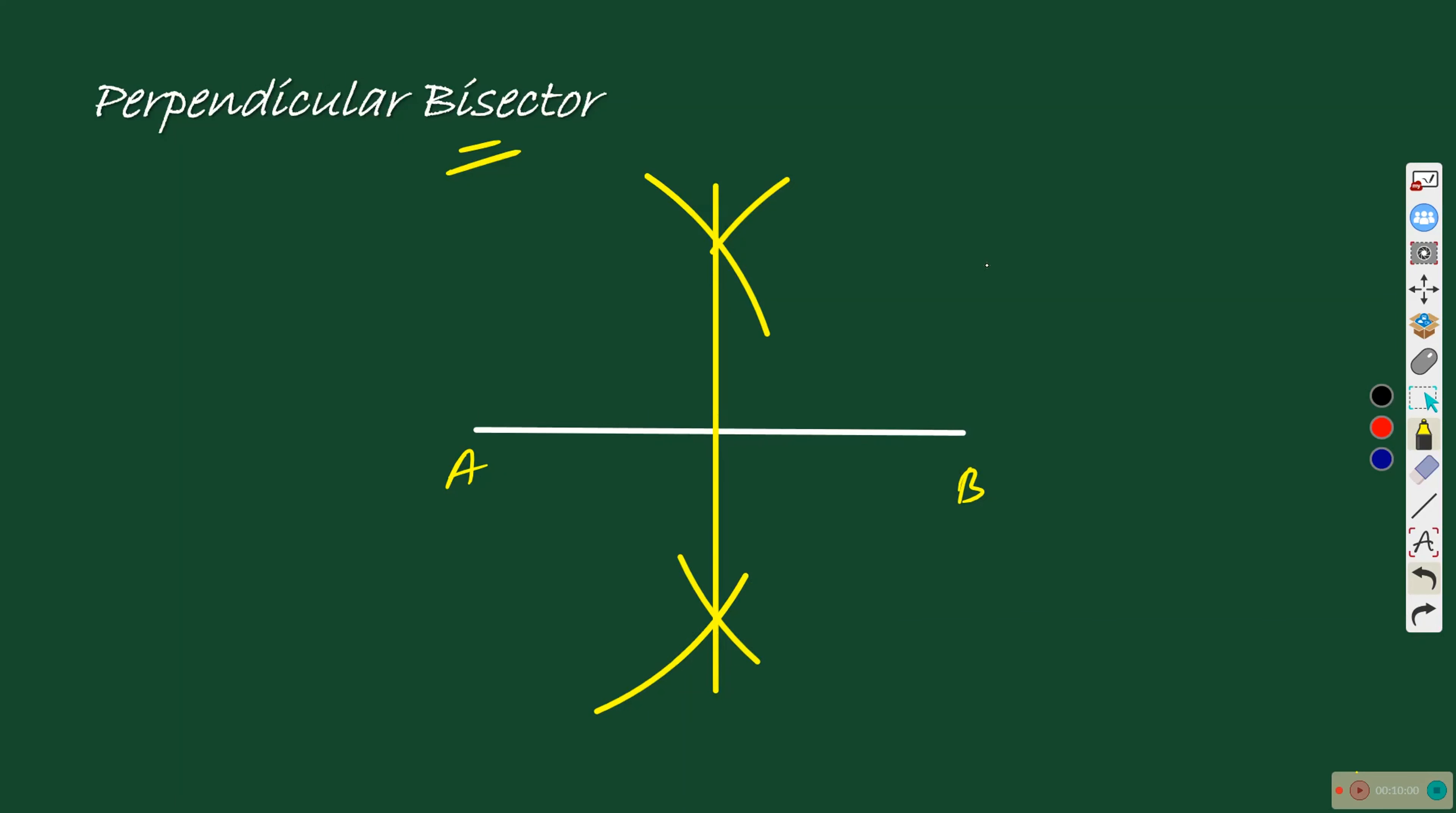That means if this is line segment AB equal to 10 cm, I will say that if I mark here, AC will be equal to 5 cm and CB also will be 5 cm.